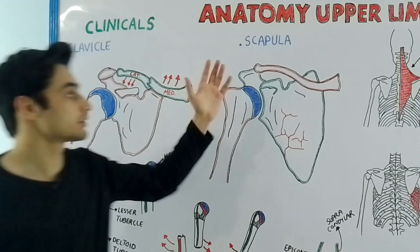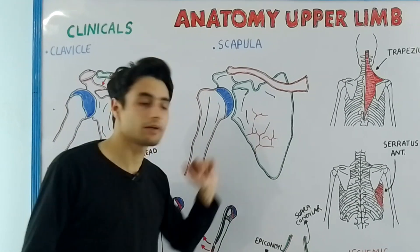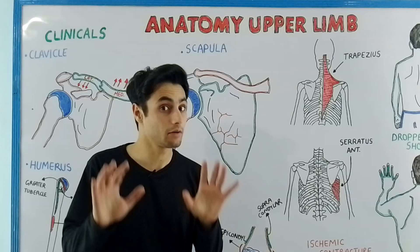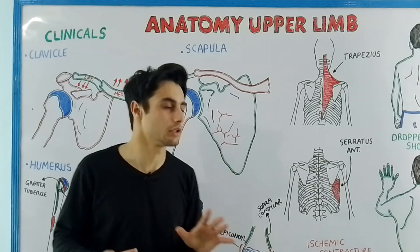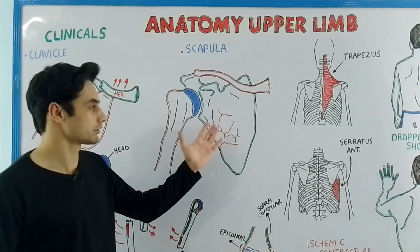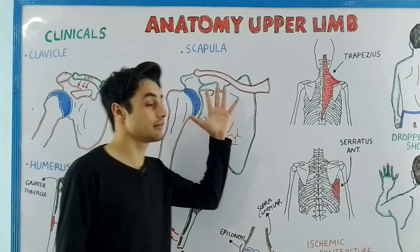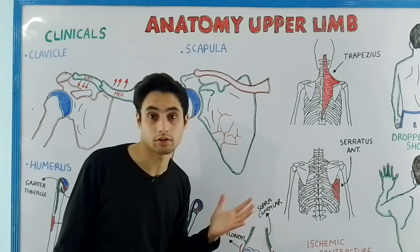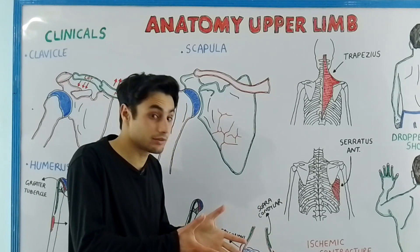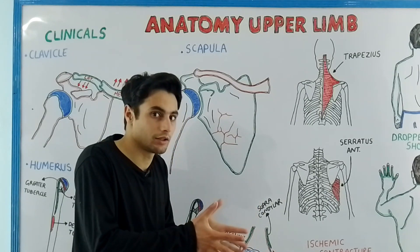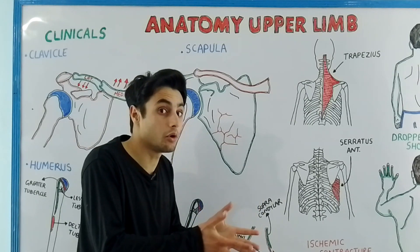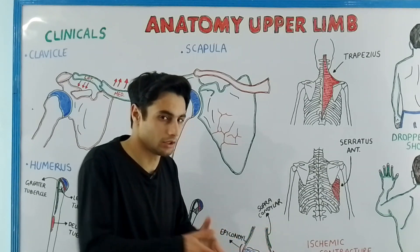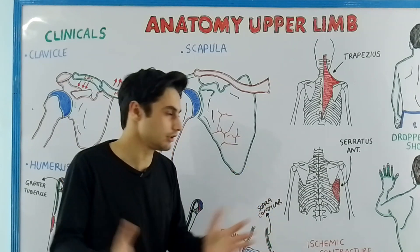Now have a look at the scapula. The fracture of the scapula bone requires very little treatment because the muscles present anteriorly and posteriorly sandwich the scapula bone and hold the bony fragments together, so it heals itself.